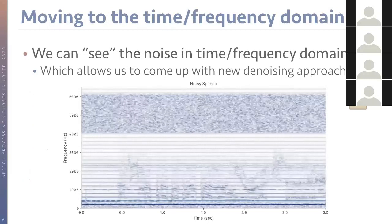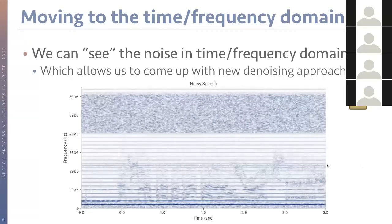We'll be seeing a lot of spectrogram plots. The color map is: the darker something is, the more energy you have. Frequency is on the vertical axis and time on the horizontal axis. This is an example of a particularly noisy speech recording. In this time-frequency domain you can see a lot of high hiss at the top, a very prominent hum throughout the signal, and then wavy lines which are the speech signal, deeply buried inside the noise.